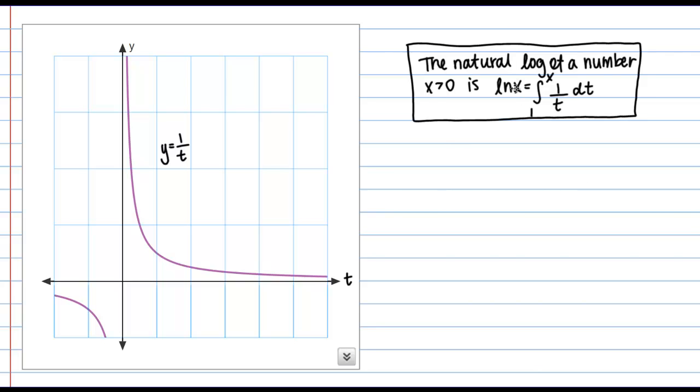So we're saying then that the natural log of x is defined by the net area under the curve 1 over t, between the t values of 1 and x. So let's say t equals 1 is right here.